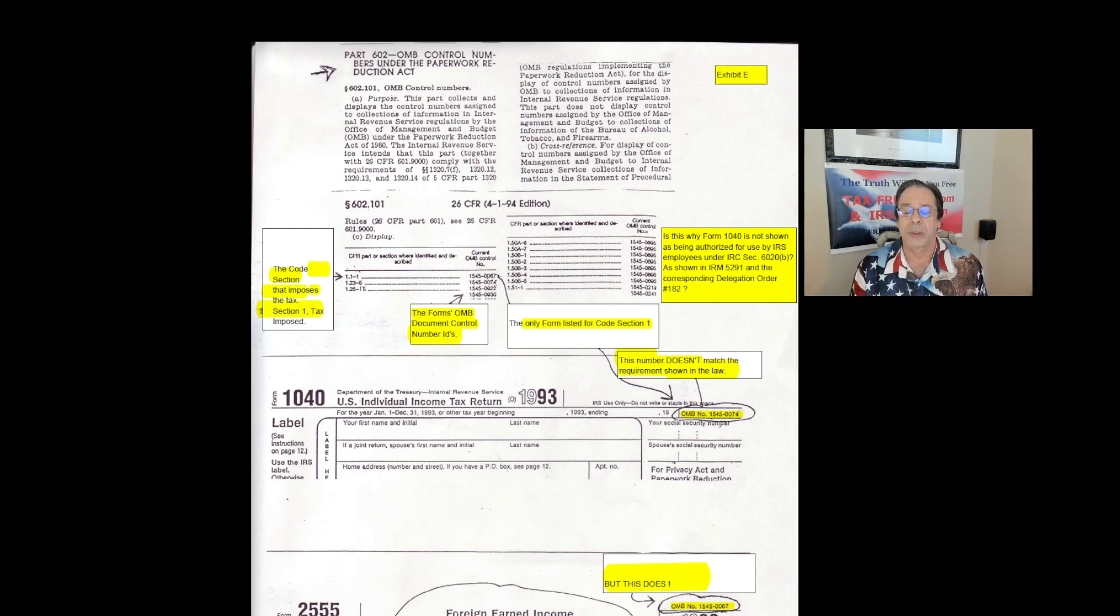to ensure that the forms, the information collection requests that the government was using, were in compliance with what the statutes actually required or mandated be collected and maintained in the way of information sets. In 1980, the government was being overwhelmed with way too much paperwork and they passed a new law called the Paperwork Reduction Act of 1980. The Paperwork Reduction Act was intended to prevent the government from collecting more information than was required by law. Up here you can see we're going to look at the legislation in the Code of Federal Regulations, how it was codified. It's in Title 26 CFR, Code of Federal Regulations, Part 602, Section 602.101.